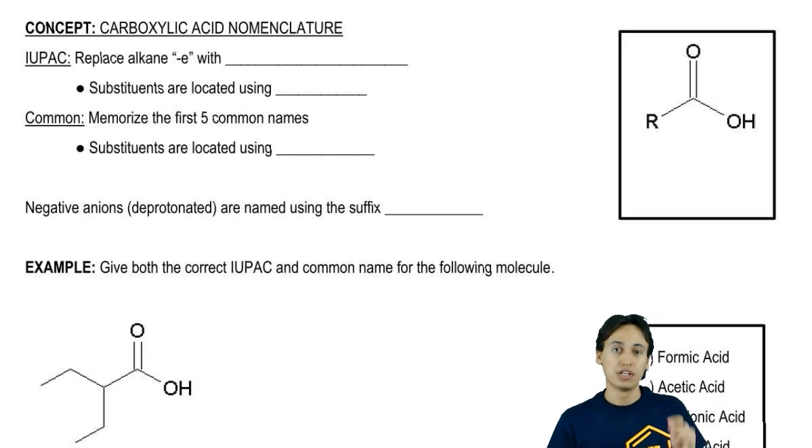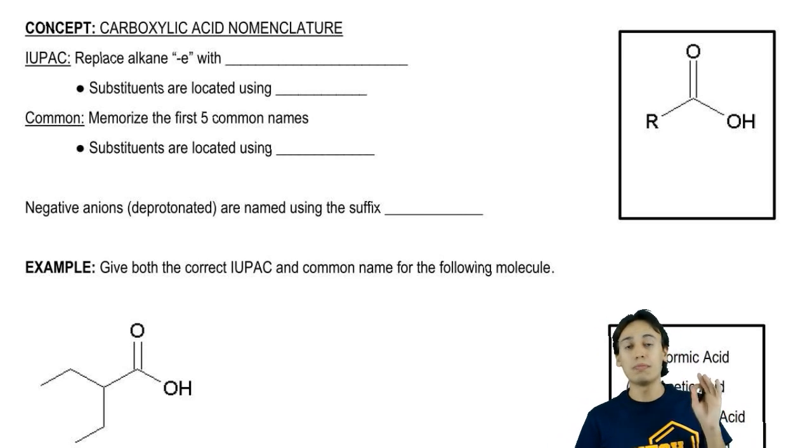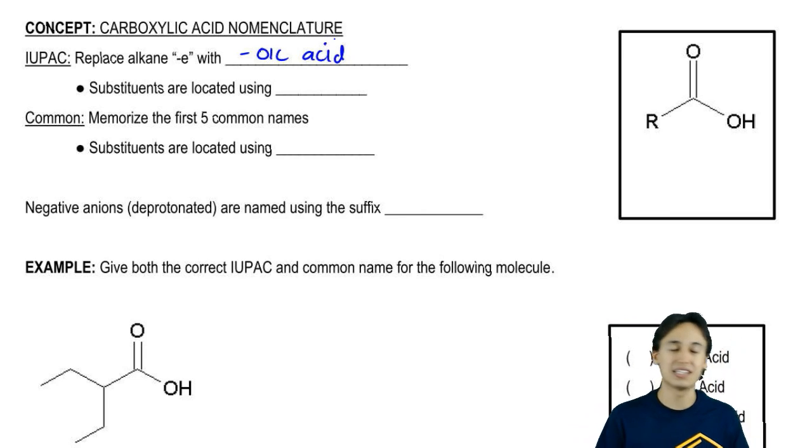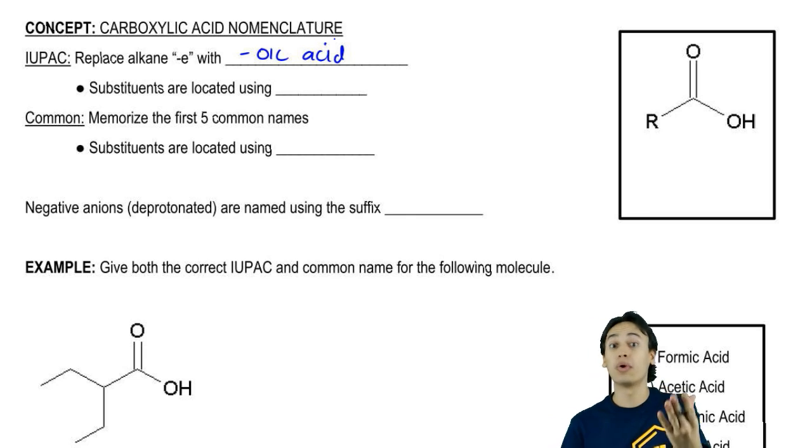In the IUPAC system, carboxylic acid is going to be a modifier. You're going to modify your root chain. You take out the E and you replace the E with the suffix oic acid. This should make sense. If you think about it, you've heard of benzoic acid before. That's the ending there.